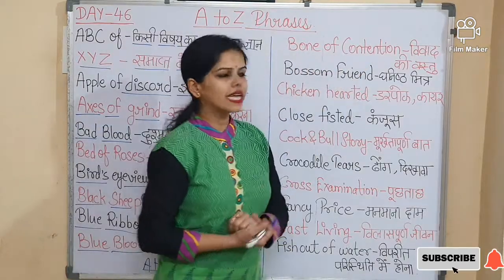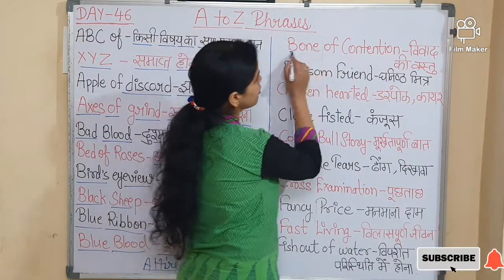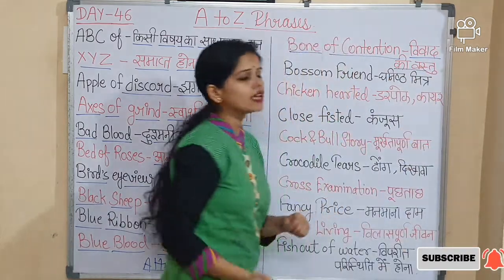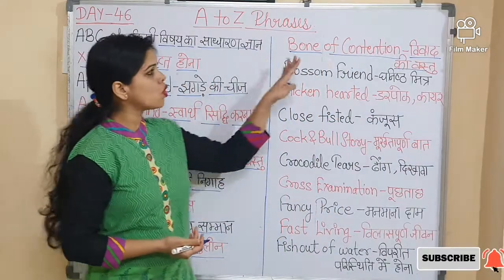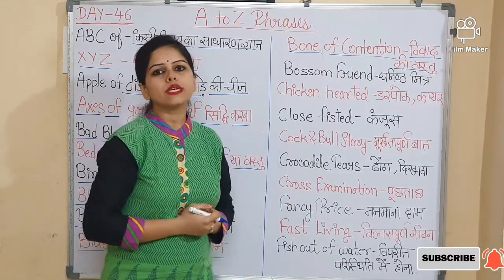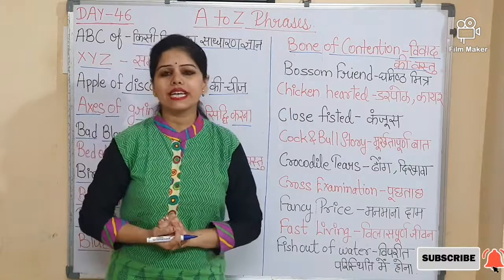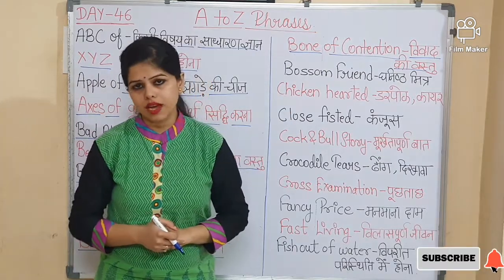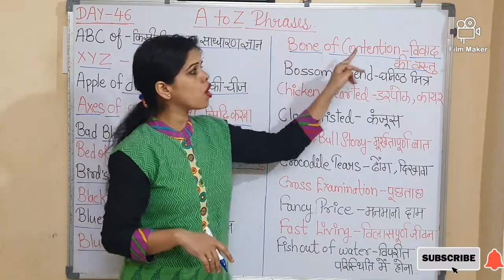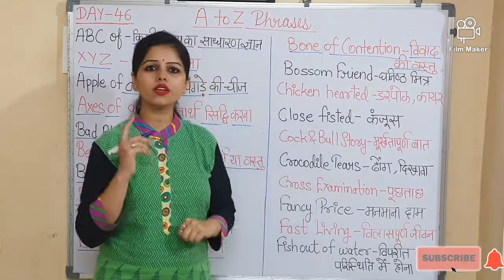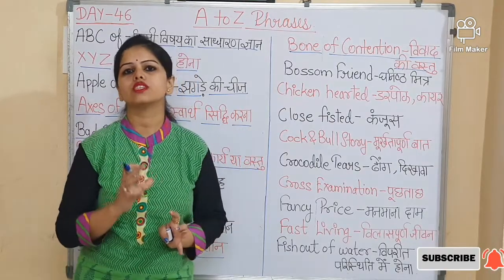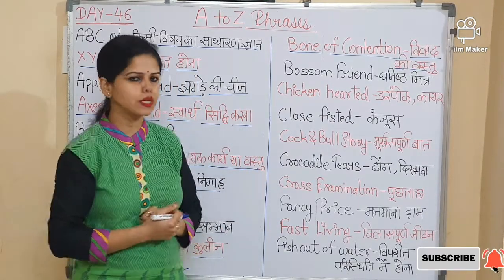Now, 'Bone of contention'. Bone of contention means vivaad ki vastu — an object or matter that causes dispute. The sentence is: That property is a bone of contention between the Guptas — woh property vivaad ki vastu hai Guptas ke beech mein.